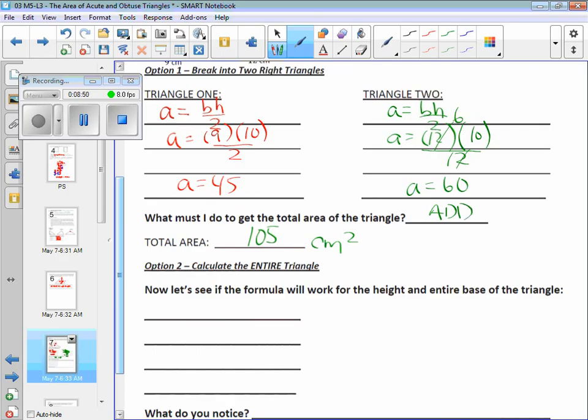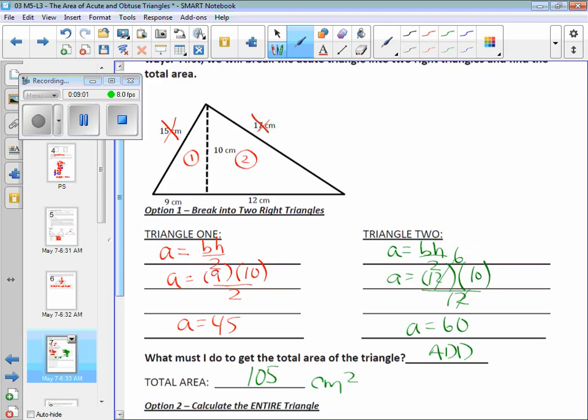Now you could do it this way, but there's a shortcut. Let's see if the formula works for the entire triangle. What's the altitude or the height of that entire triangle? Still 10. Yeah. Because we have to be careful. What's the base of the entire triangle? Oh. Go ahead. 21. The base is 9 plus 12, which equals 21.